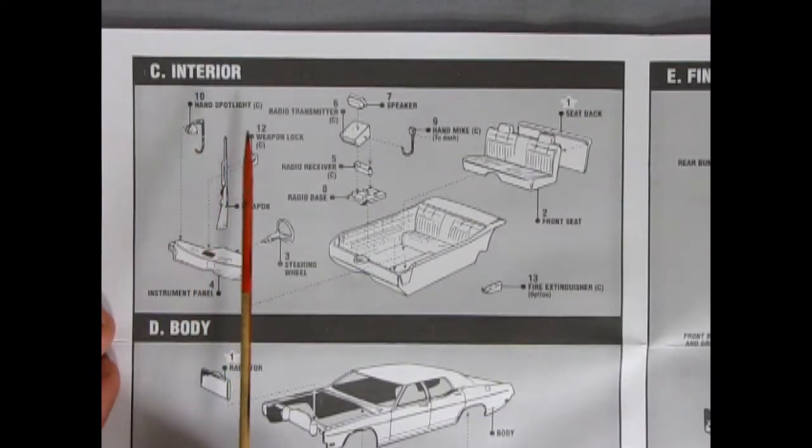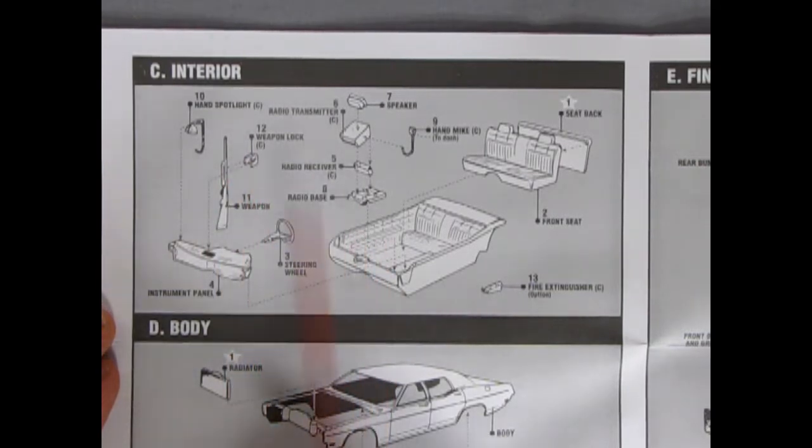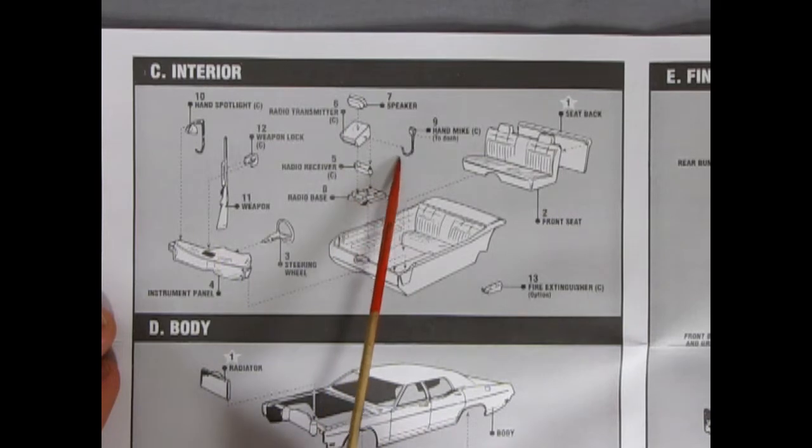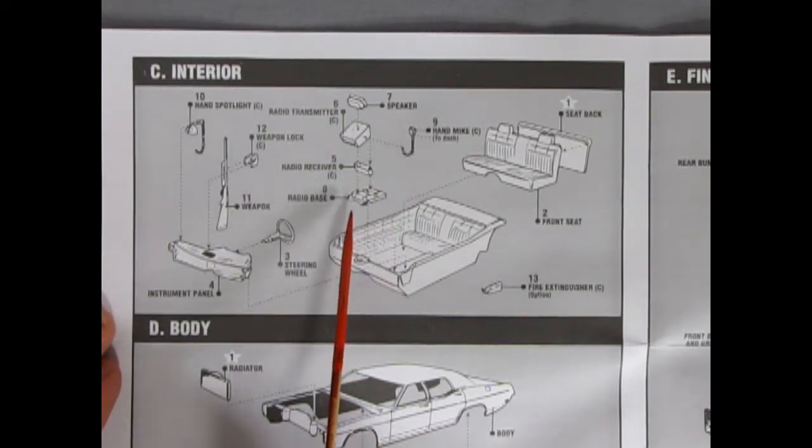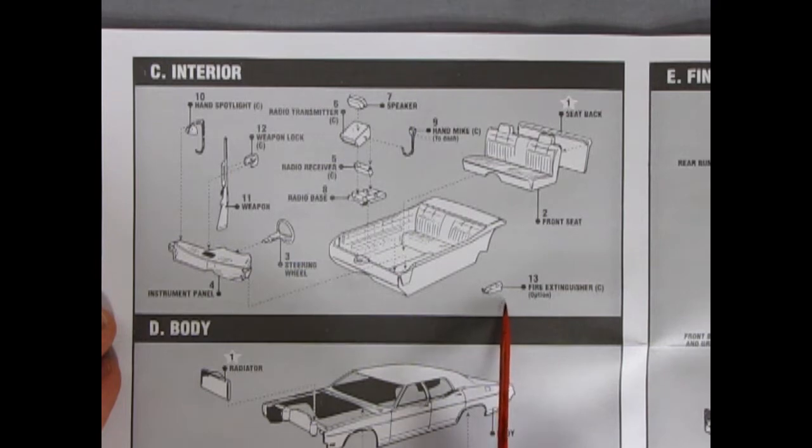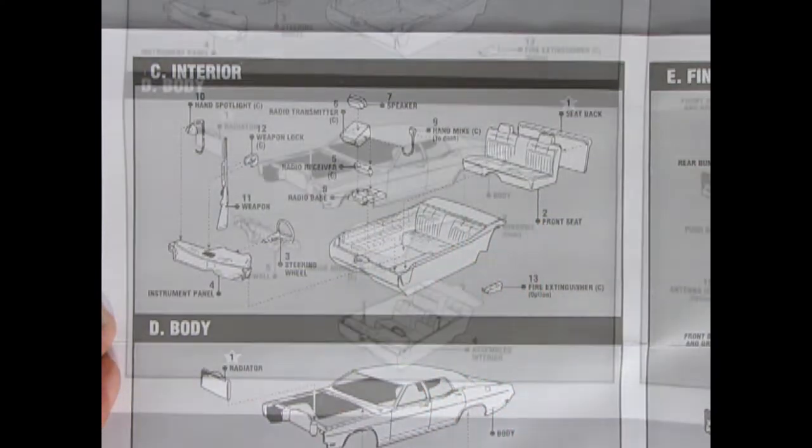Inside we have our interior with a handheld spotlight, the weapon lock and rifle, our instrument panel so we know how fast we're going, our steering wheel and of course our radio base, radio receiver, radio transmitter and speaker, and our hand mic so that we can radio back into the station and give them our 20. There's our seat back and front and our fire extinguisher just in case it gets a little too hot.